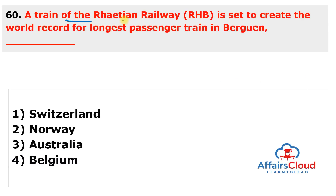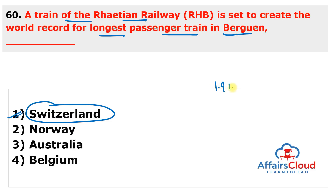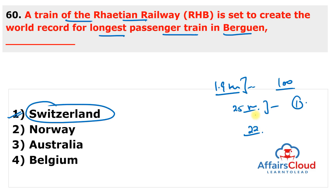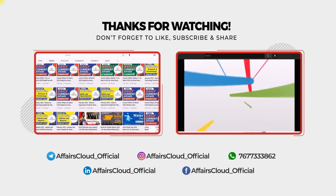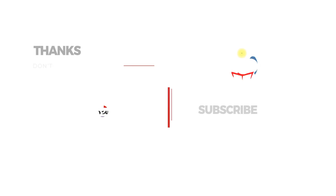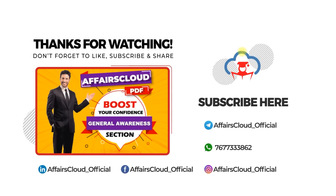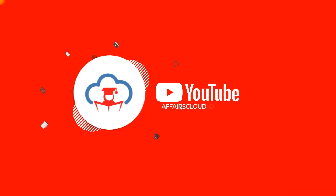Next question: a train of the Rhaetian Railway is set to create the world record for the longest passenger train — in which country? The answer is Switzerland. Switzerland's Rhaetian Railway train is set to create a world record for the longest passenger train in Bergün, Switzerland. The operator ran a 1.9-kilometer-long train composed of 100 coaches, completing a 25-kilometer journey through the Alps in less than one hour, passing through a UNESCO World Heritage route with 22 helical tunnels and 48 bridges. That's all for today — please like, share, and subscribe to our channel and join us on Facebook, Instagram, LinkedIn, and Telegram. Thank you, take care and bye bye.